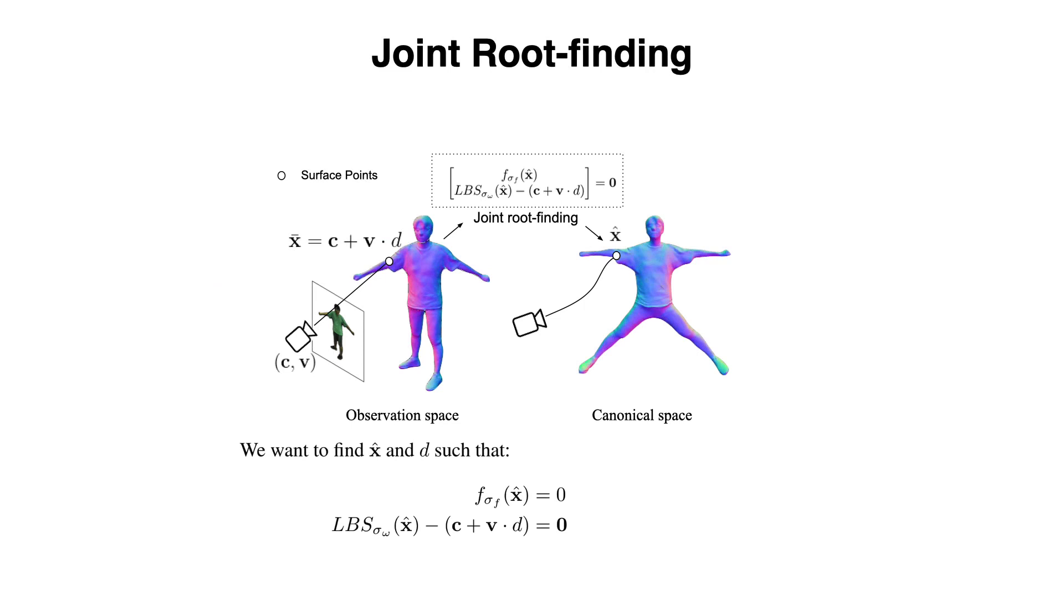Now we elaborate on the proposed joint root-finding. Given a camera array defined by camera center C and viewing direction V, we aim to find a canonical point X-hat and its depth D on the camera array which satisfy both SDF isosurface condition and LBS condition.